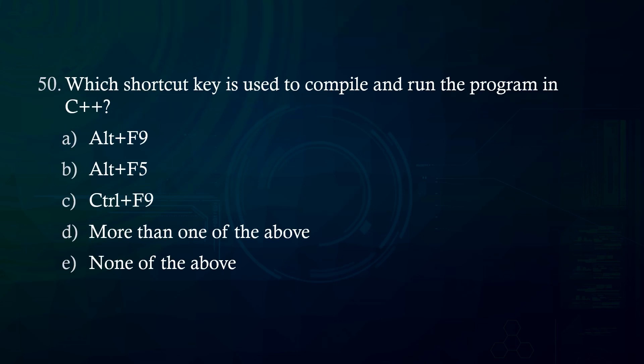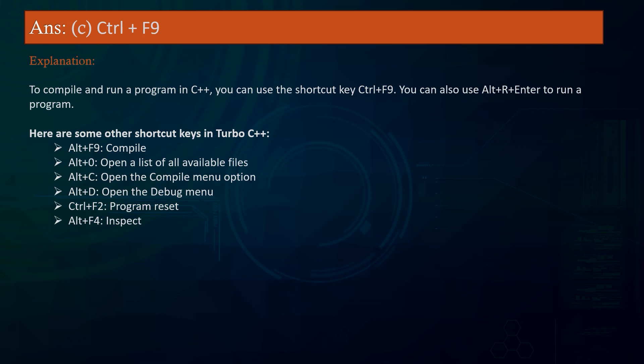Which shortcut key is used to compile and run the program in C? A. Alt F9 B. Alt F5 C. Control F9 D. More than one of the above E. None of the above. Answer: Control F9. Explanation: To compile and run a program in C, you can use the shortcut key Control F9. You can also use Alt R Enter to run a program. Other shortcut keys in Turbo C include: Alt F9 to compile, Alt O to open a list of files, Alt C to open the compile menu, Alt D to open the debug menu, Control F2 for program reset, and Alt F4 to inspect.